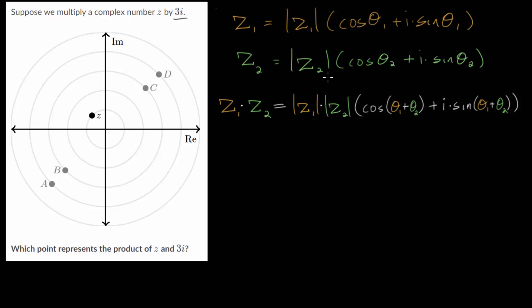To interpret complex multiplication I've pasted in the formula for two complex numbers z1 and z2 both written in polar form. When we multiply these together their product is equal to the product of their magnitudes multiplied by their new direction where the angle of this new complex number, this product, is the sum of the angles of the two complex numbers.